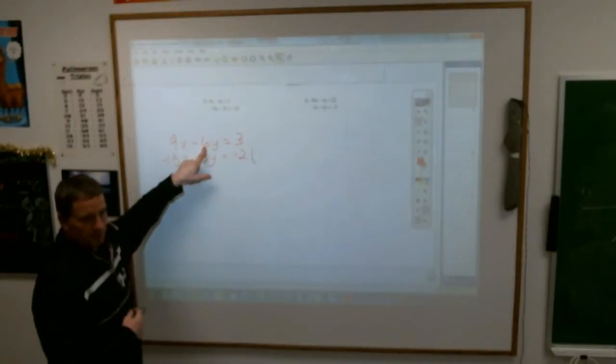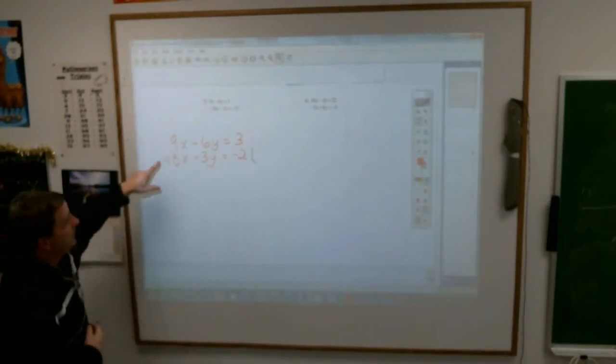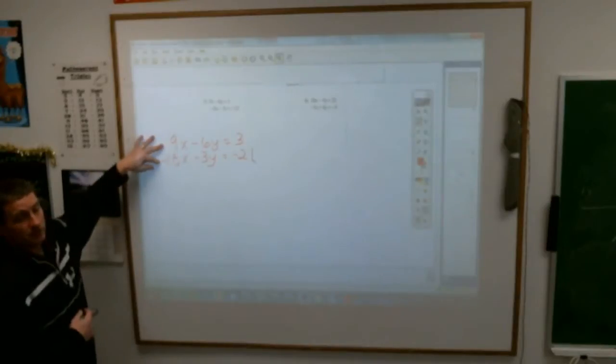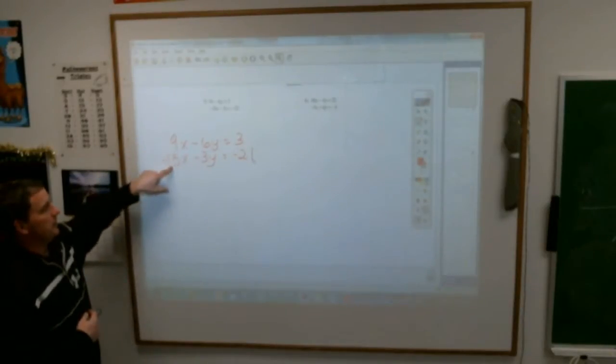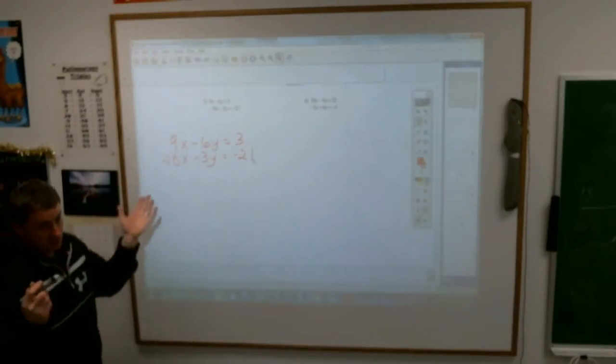in order for this to cross off with something, the other one would have to be a positive six, which I could do. I'd have to multiply by a negative two. Or if I look at this one, the signs are already opposite. For this to cross off, this top would have to be a positive 18.